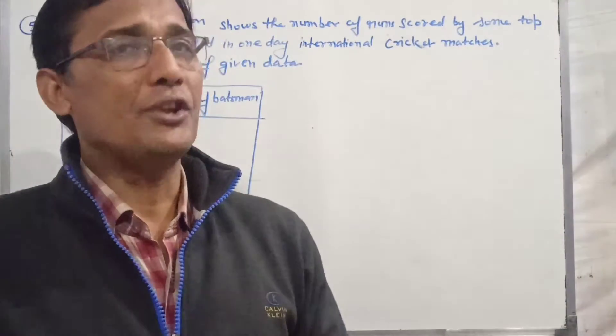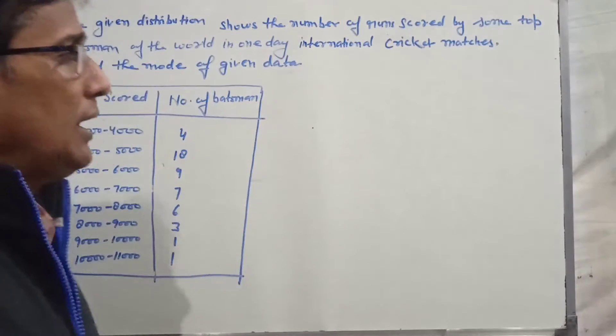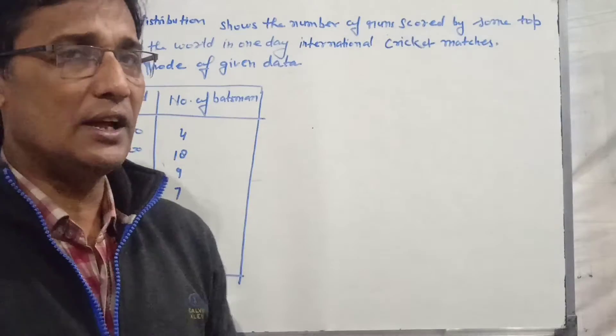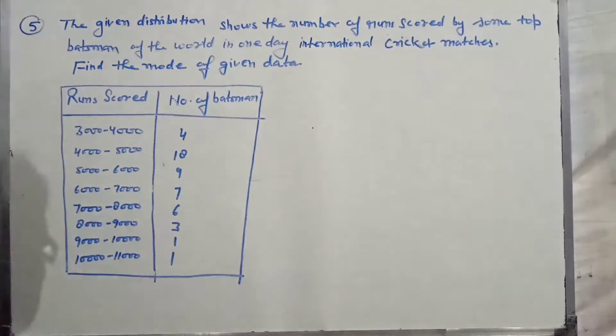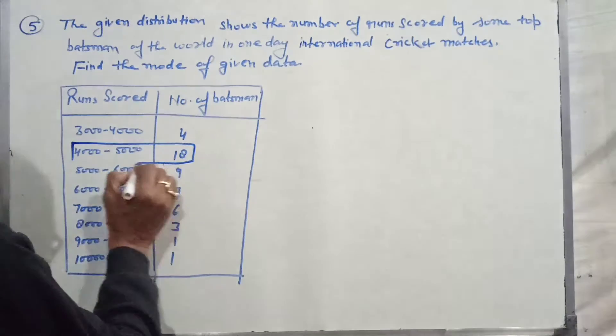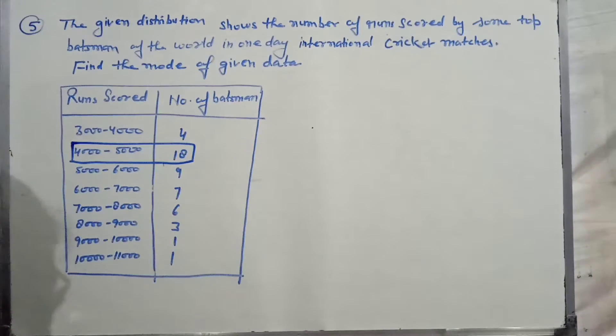For mode, you must know which frequency is the highest. You can see that the highest frequency is 18, so this will be the modal class. The modal class here is 4,000-5,000.